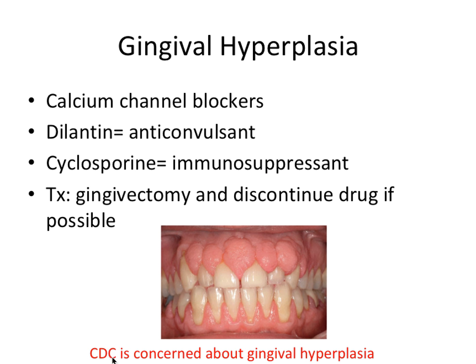Calcium channel blockers include verapamil, nifedipine, amlodipine, and a whole bunch of others. Dilantin, also called phenytoin, is an anticonvulsant, and cyclosporine is an immunosuppressant drug. That's super important to remember. Treatment for gingival hyperplasia, if it's serious, would be a gingivectomy and possibly discontinuing the drug if possible — though sometimes it's hard, since a patient may be dependent on one of these medications.